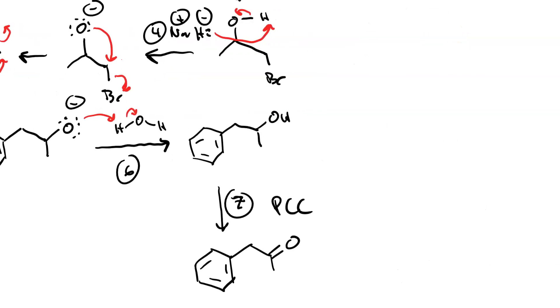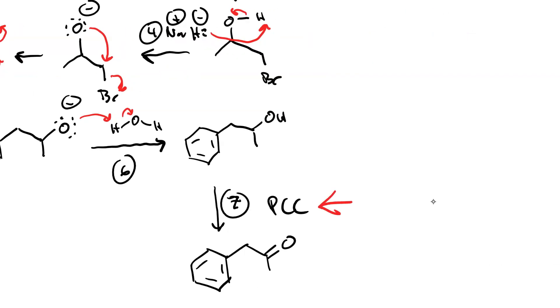Just for the record, PCC contains chromium-6. Better to use the Swern oxidation, DMSO and C2O2Cl2.